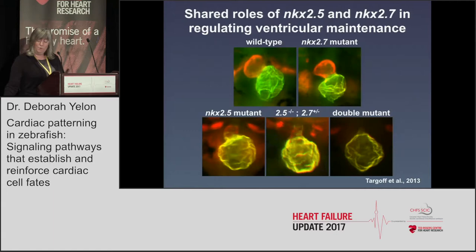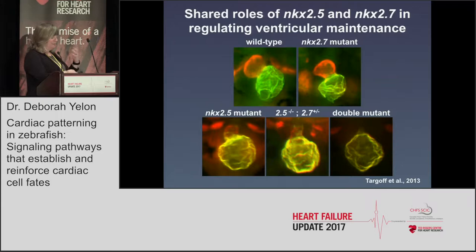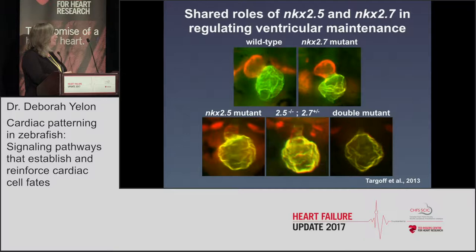This transition is even more extreme when we look at the shared functions of NKX 2.5 and another gene in the same family, NKX 2.7, which is very related to NKX 2.5 and expressed in the same areas. In NKX 2.5 mutants you can see the small ventricle, the large atrium, and even some atrial gene expression misplaced within the small ventricle. When we remove one copy of NKX 2.7, that phenotype becomes more enhanced, and in the double mutant it's pretty much entirely an atrium.